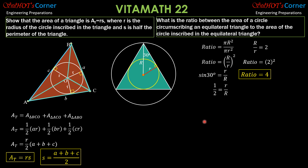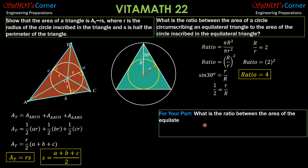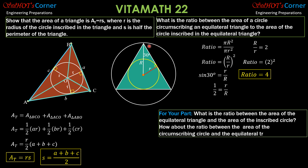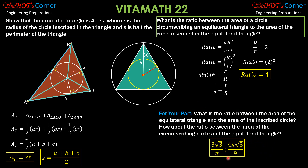Now for your part: What is the ratio between the area of the equilateral triangle and the area of the inscribed circle? And also, what is the ratio between the area of the circumscribing circle and the area of the equilateral triangle? These are your exercises so that you can participate and learn. The answer for the first part is 3 square root of 3 over pi, and for the second part, 4 pi square root of 3 over 9.